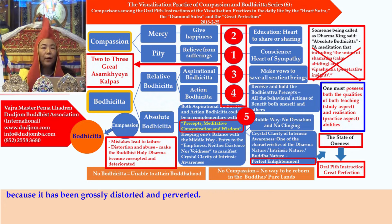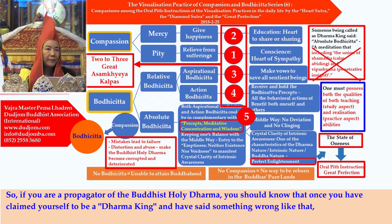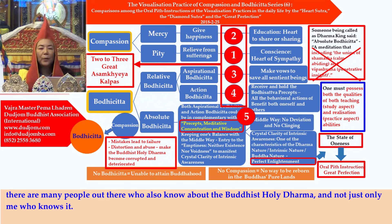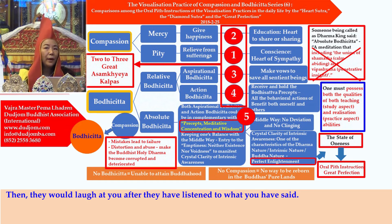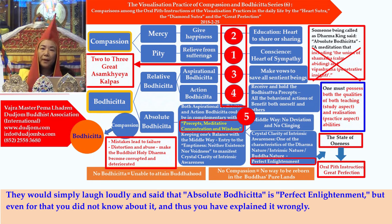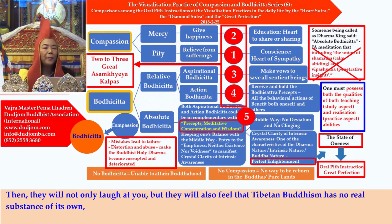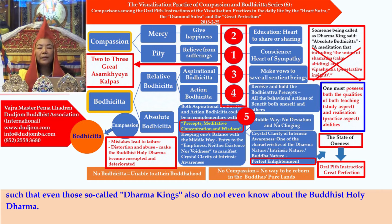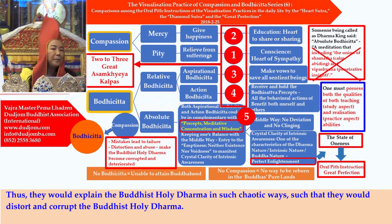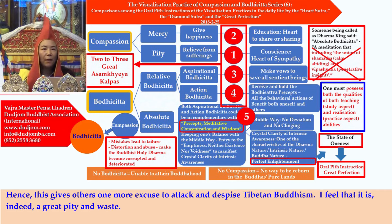Because it has been grossly distorted and perverted, if you are a propagator of the Buddhist holy dharma, you should know that once you have claimed yourself to be a Dharma king and said something wrong, there are many people who also know about the Buddhist holy dharma who would simply laugh loudly and say that absolute bodhicitta is perfect enlightenment — but even that you did not know and explained wrongly. Then they will not only laugh at you, but they will also feel that Tibetan Buddhism has no real substance, such that even those so-called Dharma kings do not know about the Buddhist holy dharma. This gives others one more excuse to attack and despise Tibetan Buddhism.